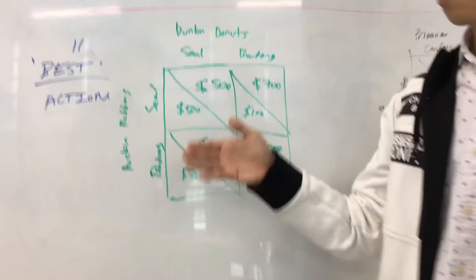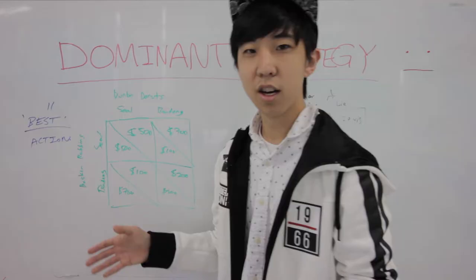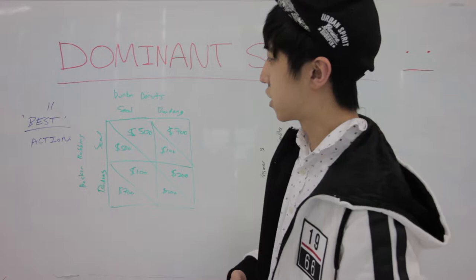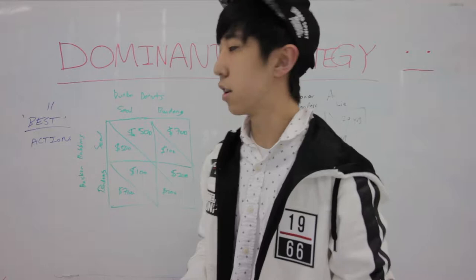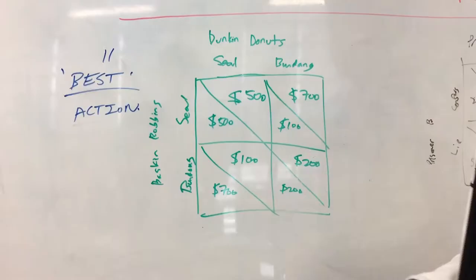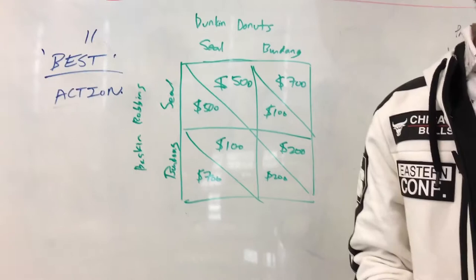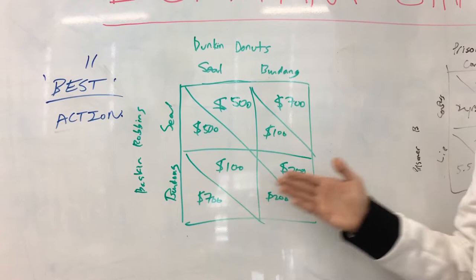Looking at this first example regarding whether Dunkin Donuts and Baskin Robbins, two of the most famous food places, should set up their stores in Seoul or Brundang. Depending on where they set their market, they can earn different levels of profit. If both decide to set their shop in Seoul, they will each earn $500. If they both decide to go with Brundang, they will each earn $200.